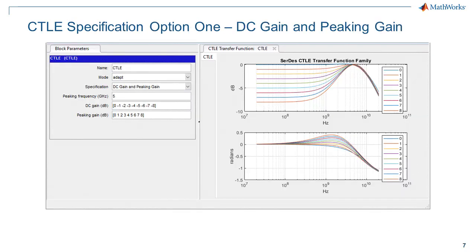Next is the control over how the configuration is specified. The first option is DC gain and peaking gain. This is a convenient way to do what-if exploration because there are two gains and one frequency to specify. The default is a set of nine configurations, and you can modify the vectors so that there are more or fewer configurations. The DC gain is the gain at zero hertz in dB.